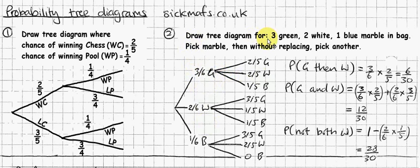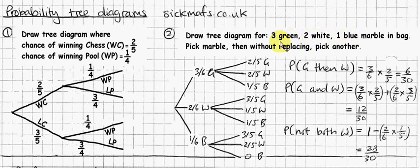Let's move on to our second example. We're going to draw a tree diagram. We've got three green marbles, two white marbles, and one blue marble in a bag. We're going to blindly — without looking — pick a marble, then without replacing it, pick a second marble. There are three different things that could happen on the first pick: green, white, or blue. Three green out of six total, so the chance of green is 3/6, white is 2/6, and blue is 1/6.